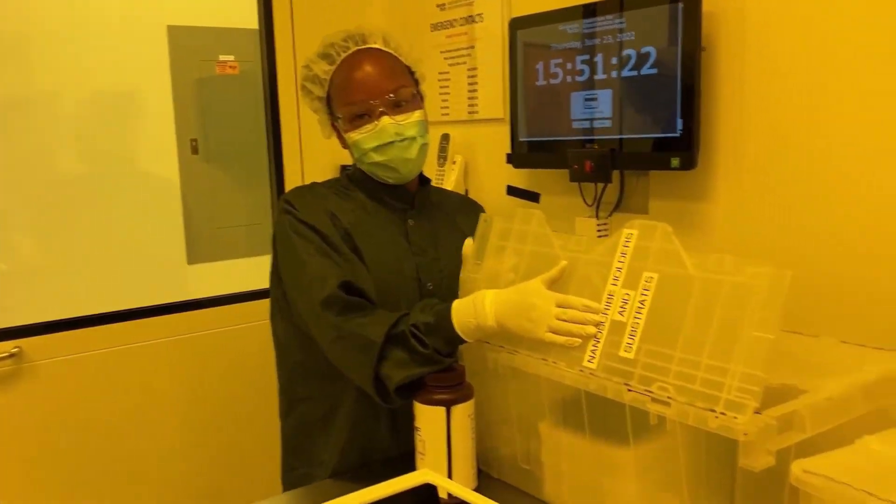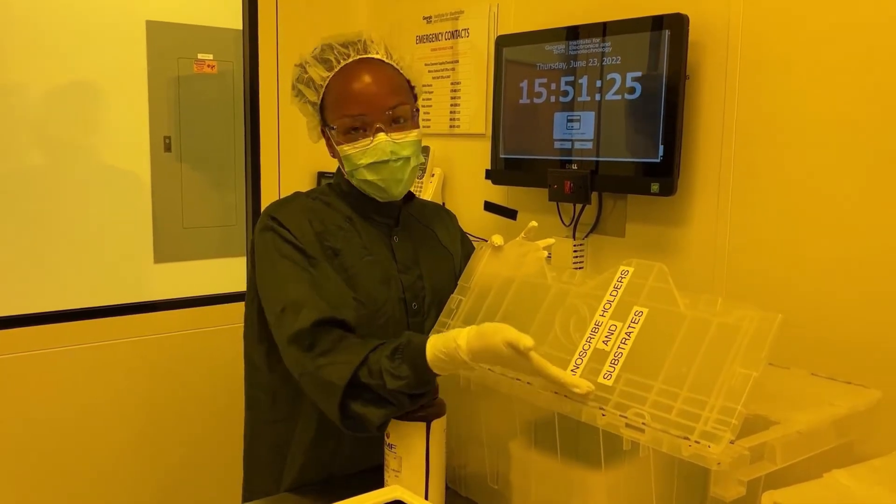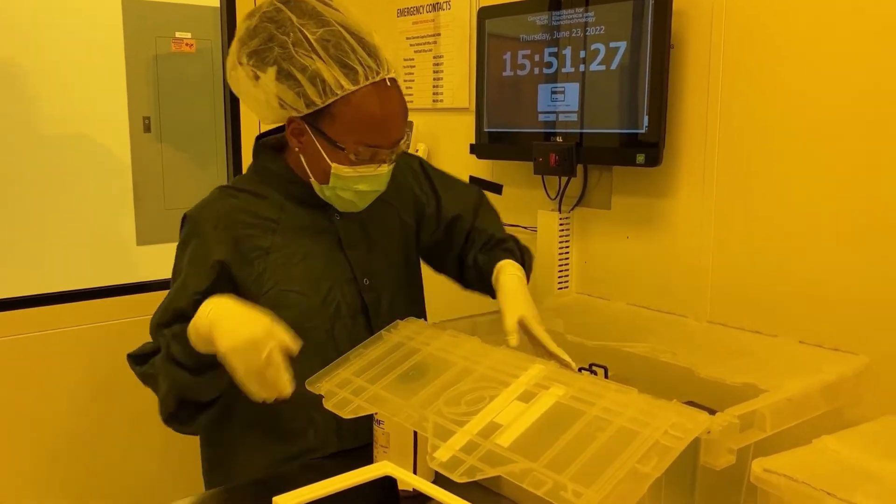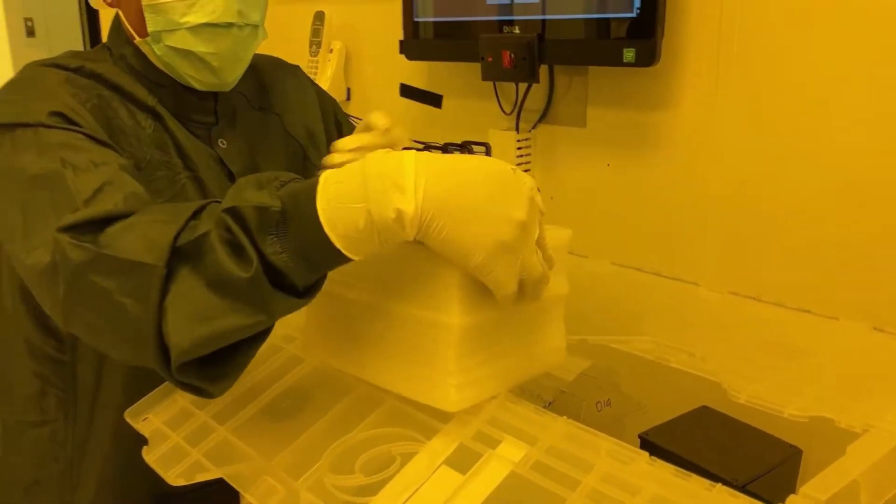Start at the box by the door. This will have different substrate holders, substrates, and the multimeter. In general, most things you need to prepare your sample will be found here.